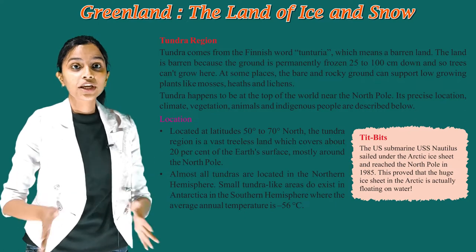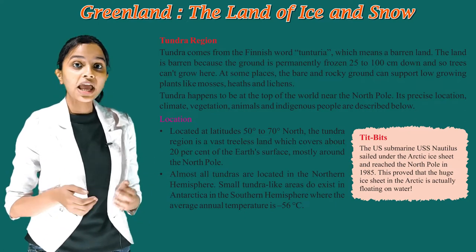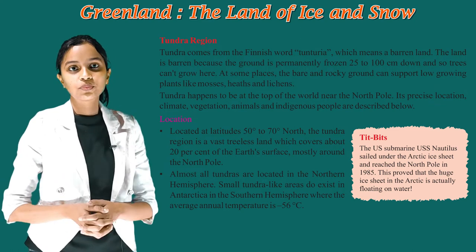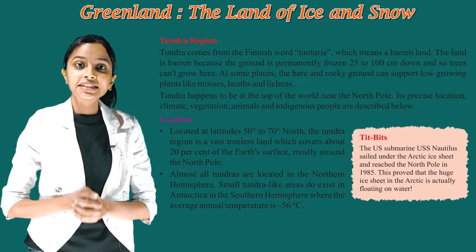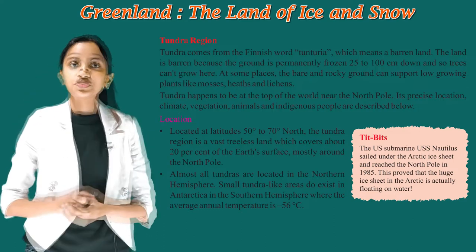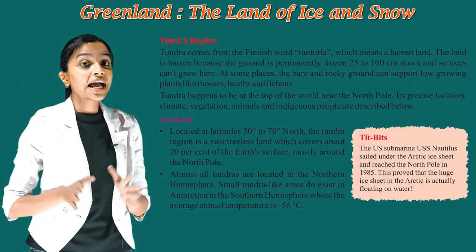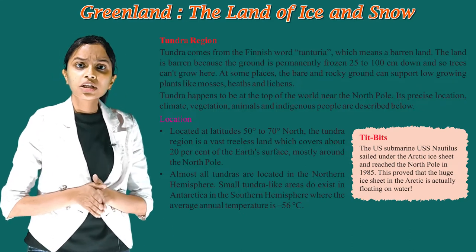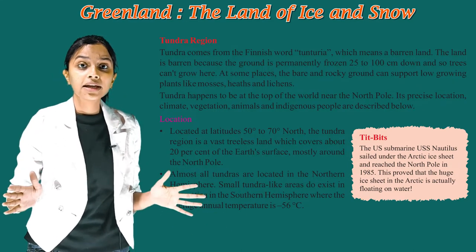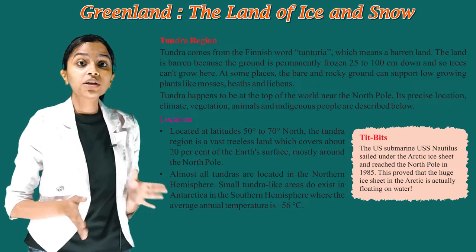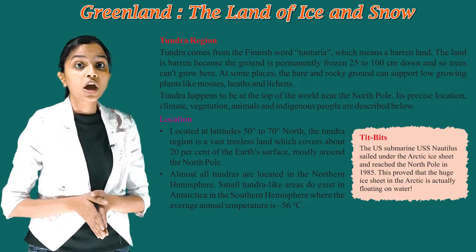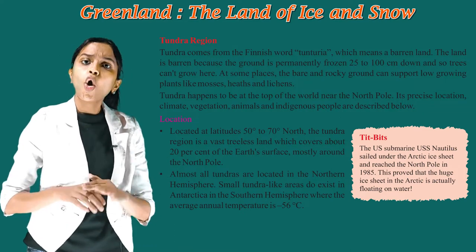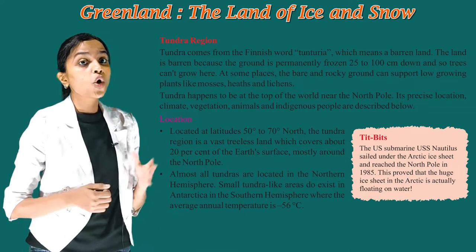Its precise location, climate, vegetation, animals, and indigenous people are described below. Located at latitudes 50 degrees to 70 degrees north, the Tundra region is a vast treeless land which covers about 20% of the earth's surface, mostly around the north pole. Almost all Tundras are located in the northern hemisphere.